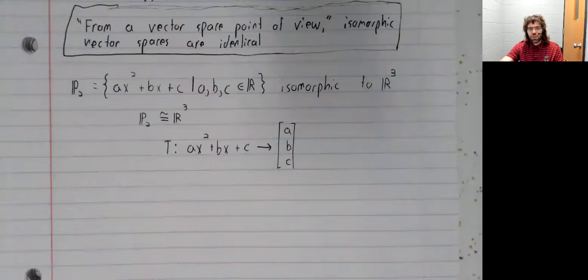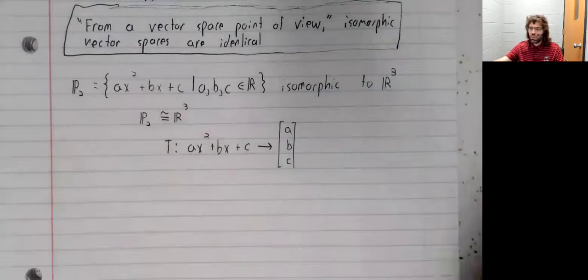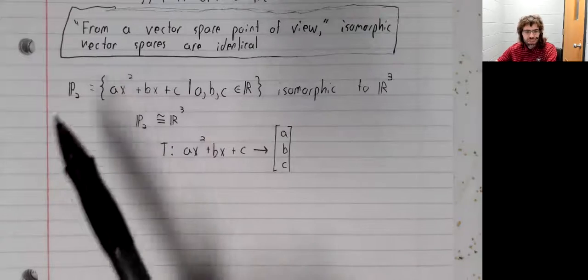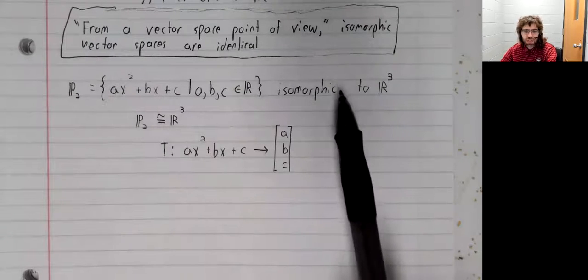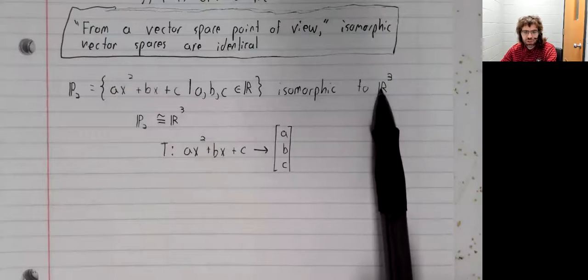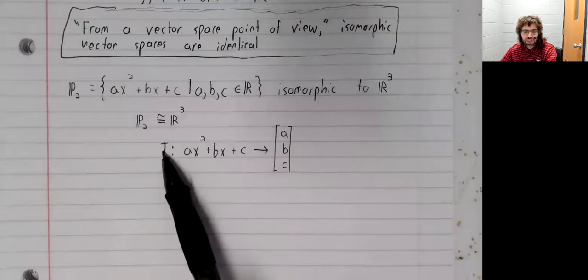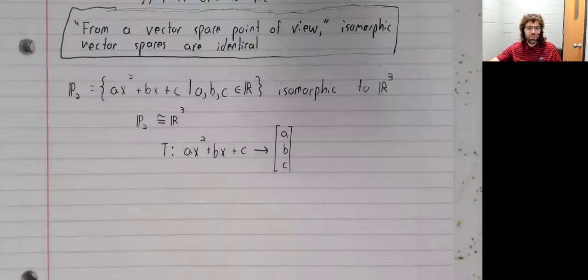Let's see how the concepts of isomorphism can be used to answer questions that might otherwise be difficult to answer. In particular, let's come back to P sub two, and the fact that P sub two is isomorphic to R sub three, and that this is an isomorphism.